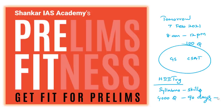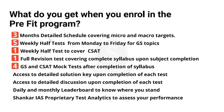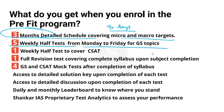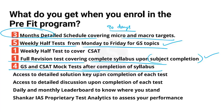By enrolling in the program, you will get a detailed schedule for three months covering both micro and macro targets for preparation, and you will be getting five weekly half tests from Monday to Friday for GS topics. One full revision test will be there upon the completion of a subject. After completion of the syllabus, you will get four GS and four CSAT mock tests. To ensure participants qualify the CSAT paper, the program includes a CSAT test every week of 50 questions.